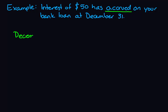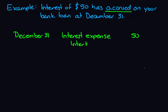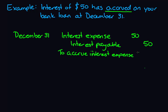So your journal entry will look like this. Your date is December 31st. The first account you're going to use is interest expense for $50, and interest payable for $50. You're debiting your interest expense, increasing your expense account, and increasing your payable — the amount that you owe to the bank. Your description is to accrue interest expense on loan.